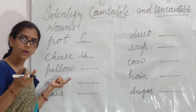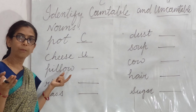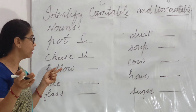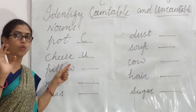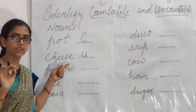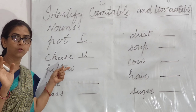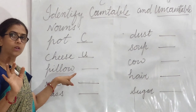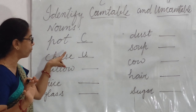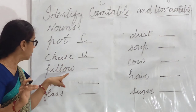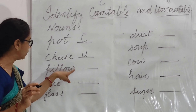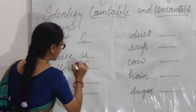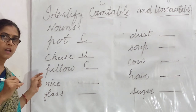Pillow — one pillow, two pillows. Pillows bhi use karte hain, iska plural form bhi use karte hain. Jabki hum cheese ka plural form nahi use karte — cheeses koi word nahi hota. Pillow ka hum plural use karte hain, jaisi ki pot ka pots kehte hain. So pillow can be counted, so we will write C.